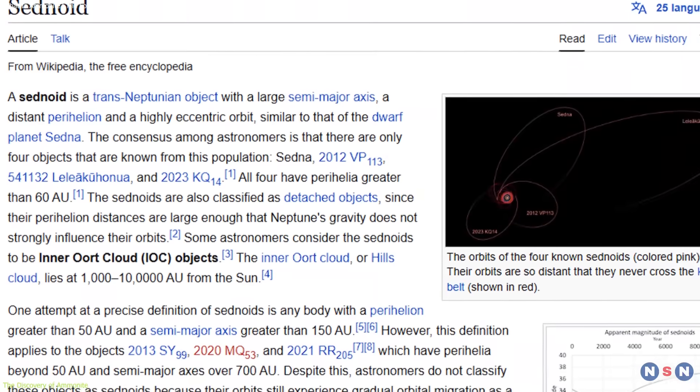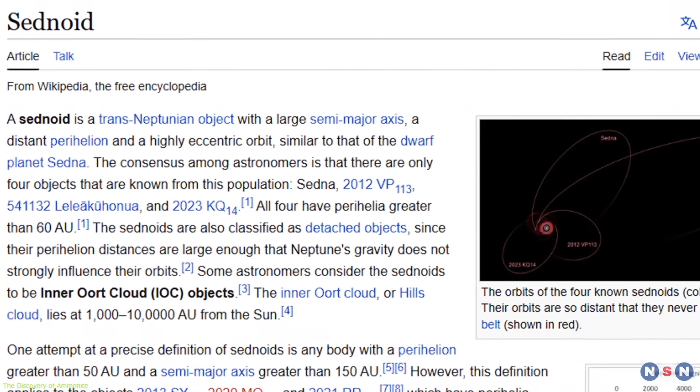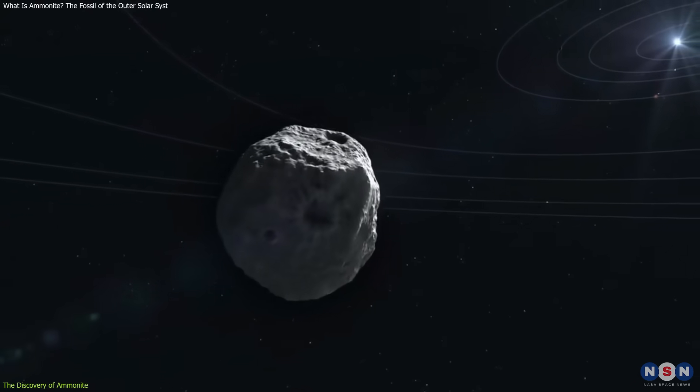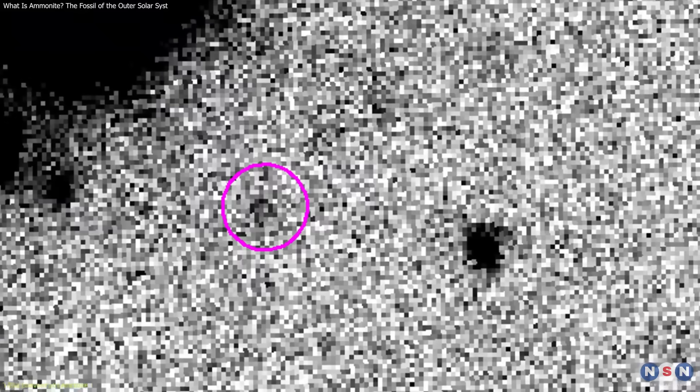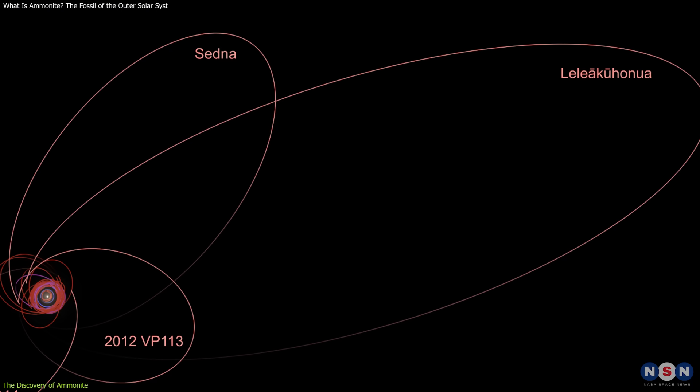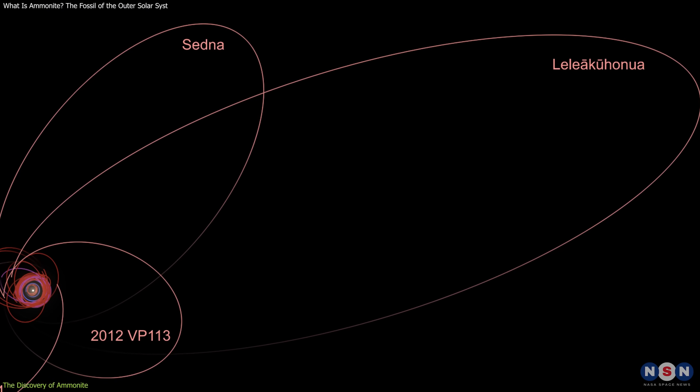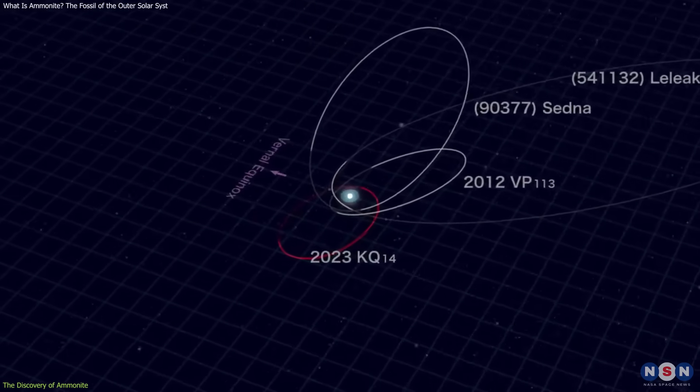This trajectory places it in an exceptionally rare category of objects known as sednoids. These are distant, detached bodies that don't come close enough to be influenced by Neptune's gravity. Before Ammonite, only three were known—Sedna, 2012 VP113, and 2015 TG387. Yet it doesn't just expand that list, it complicates it.